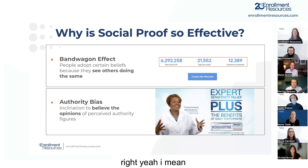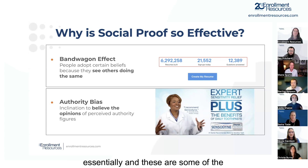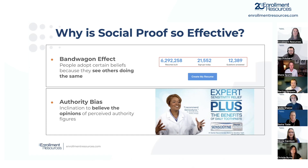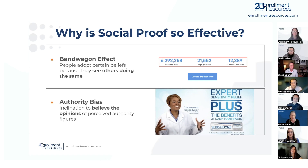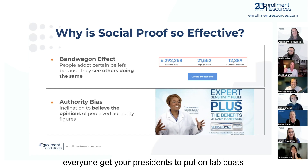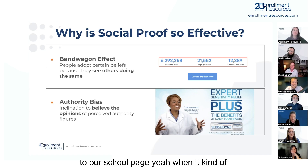These effects essentially underlie why social proof works. There's the bandwagon effect — if you see other people do something, you're probably going to do the same. There's also authority bias: the inclination to believe the opinions of perceived authority figures. Sensodyne ran two different tests — one with dentists dressed normally and one wearing lab coats — and the lab coat version made consumers trust the brand significantly more. The lesson: perceived authority matters, and professional photography ties into that.